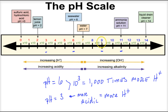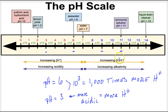So that's the pH scale in a nutshell. Understand that it's exponential, and that as you move from seven to zero, an acid increases in concentration of hydrogen ions and decreases in concentration of OH− ions. And as you move from seven to 14, there's an increase in hydroxide ions and a decrease in hydrogen ions in solution. That's the pH scale, and I hope that was helpful.